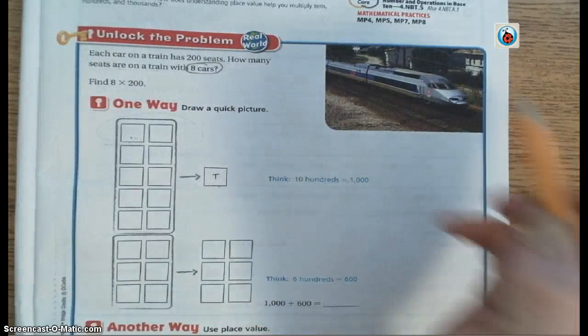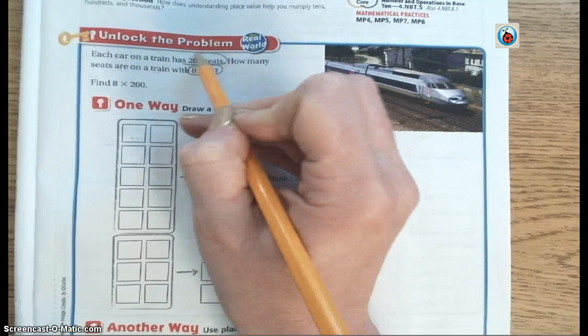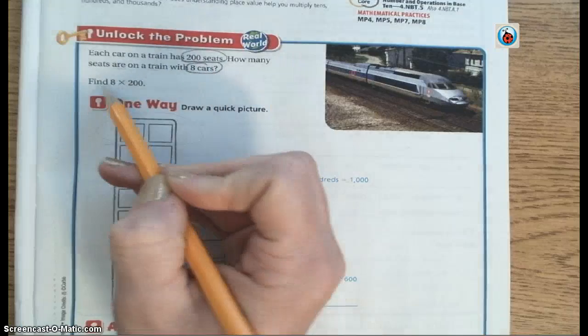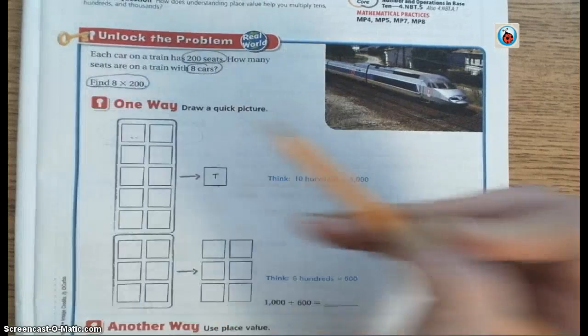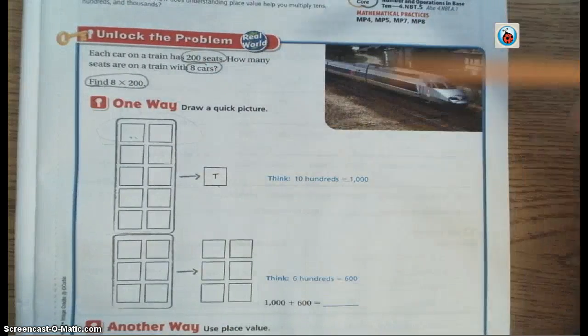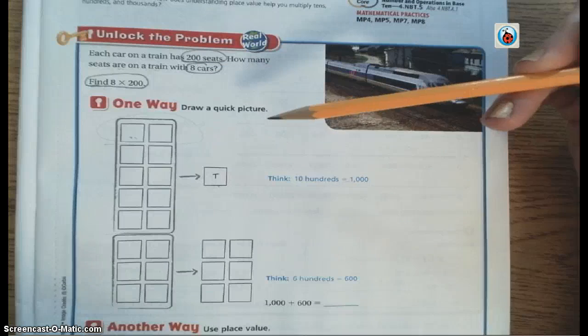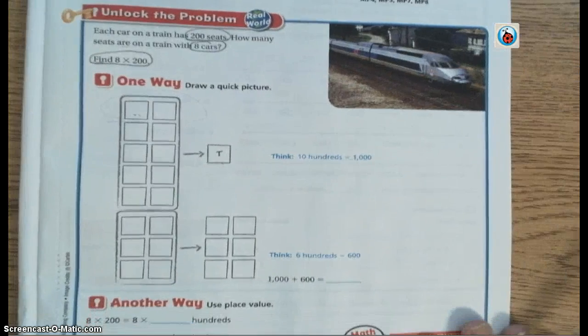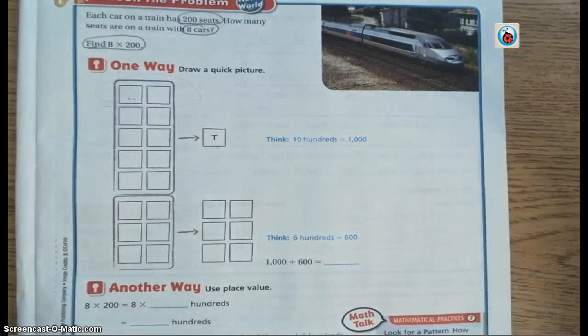How many seats are in each car? There are 200 seats in each car. So we are essentially finding what eight times 200 is, because we want to find out how many total seats are on the whole train. We know that the train has eight cars, and for each car, there are 200 seats. So we're going to show you three different ways to do this problem, or a problem similar to this today.